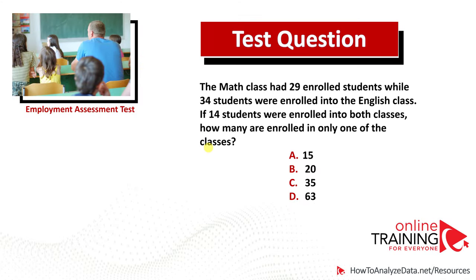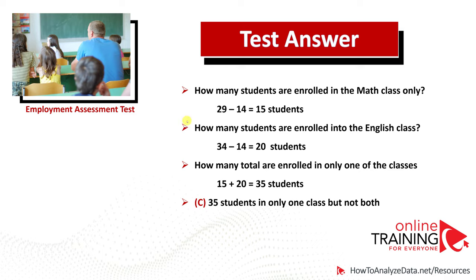Let's recap. We have groups of students enrolled in both English and math classes. To solve this, we find students enrolled in only one particular class and then add them up to get the correct answer. Hopefully you've nailed this question.